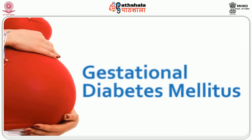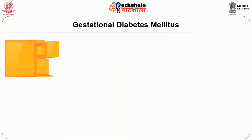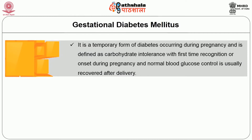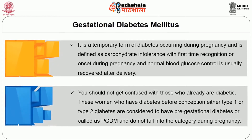To understand this better, let us start our lesson by knowing what is gestational diabetes mellitus or GDM as it is commonly known. Gestational diabetes mellitus is a temporary form of diabetes occurring during pregnancy and is defined as carbohydrate intolerance with first-time recognition or onset during pregnancy, and normal blood glucose control is usually recovered after delivery. You should not get confused with those who are already diabetic. Women who have diabetes before conception, either type 1 or type 2, are considered to have pre-gestational diabetes or PGDM and do not fall into this category.